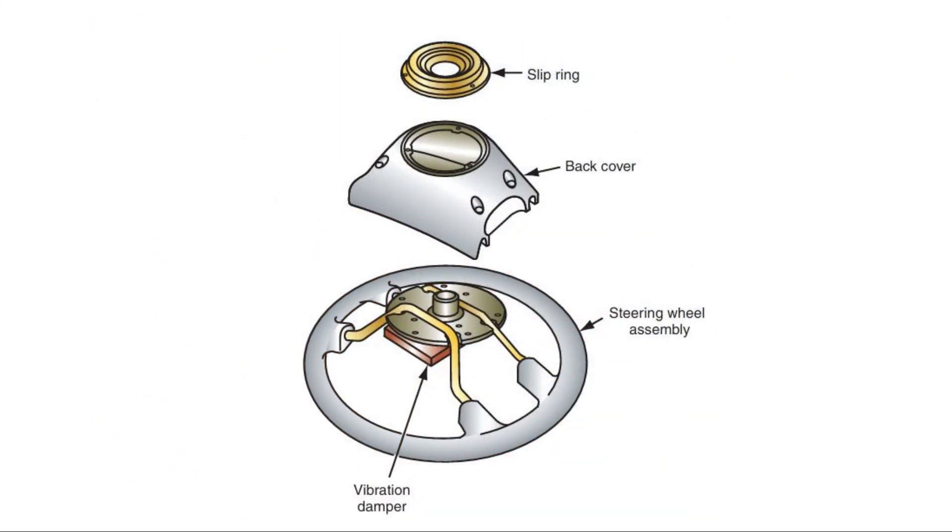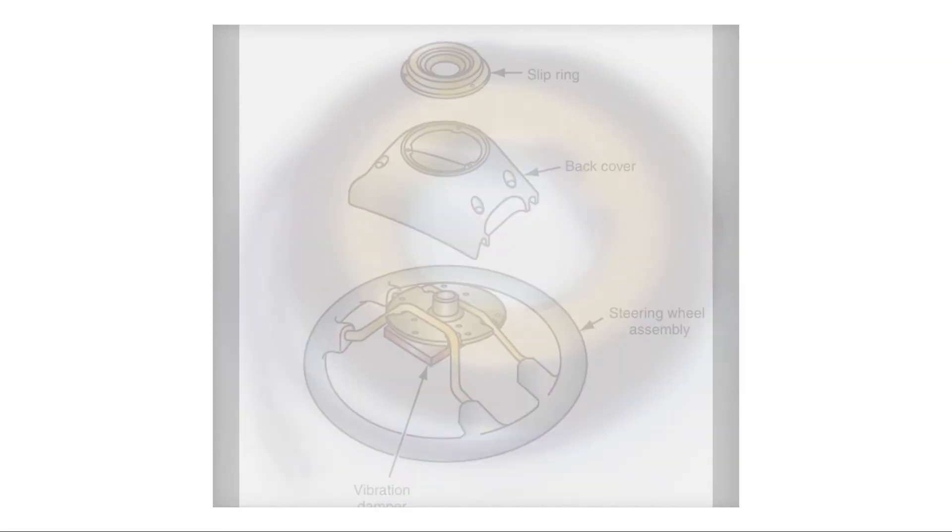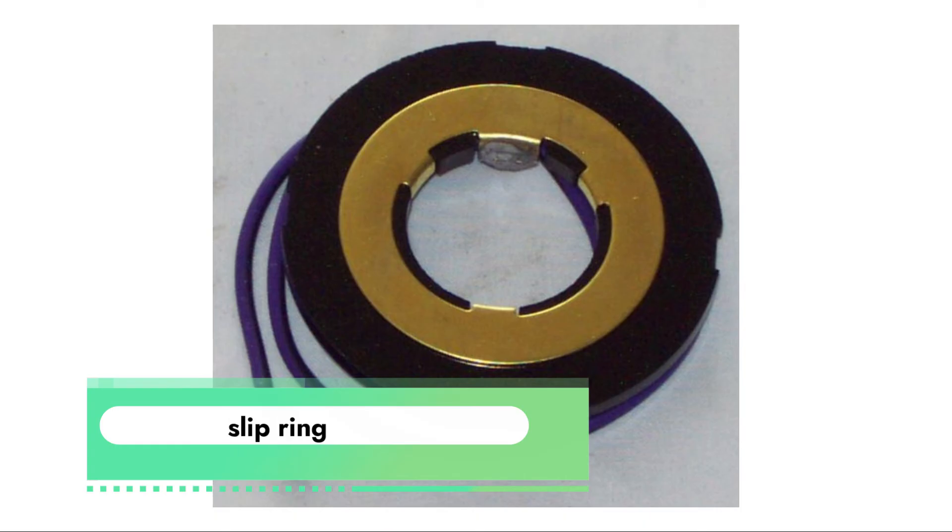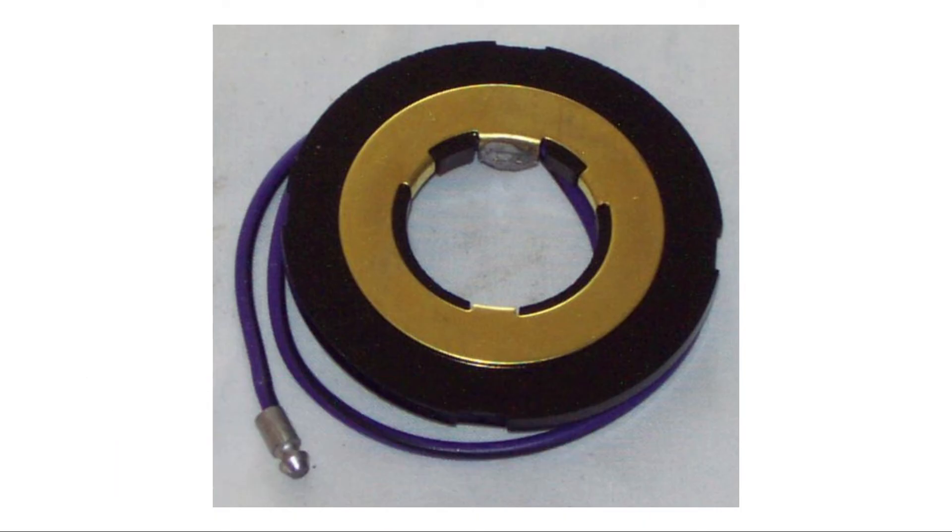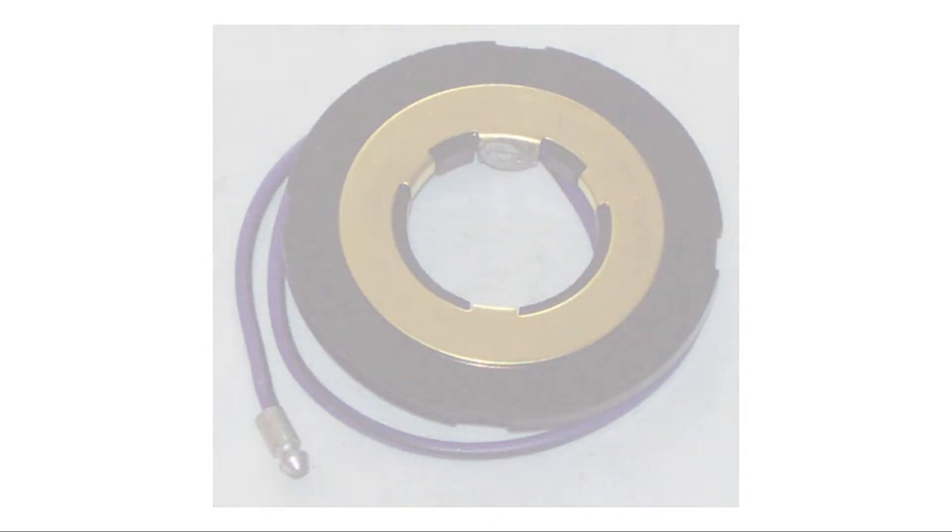which contains contacts that ensure continuity for the horn control in all steering wheel positions. These contacts consist of a circular contact in the steering wheel that slides against a spring-loaded contact in the steering column.